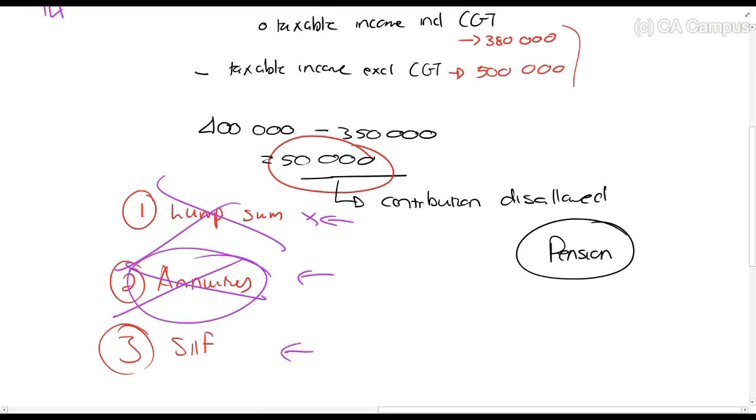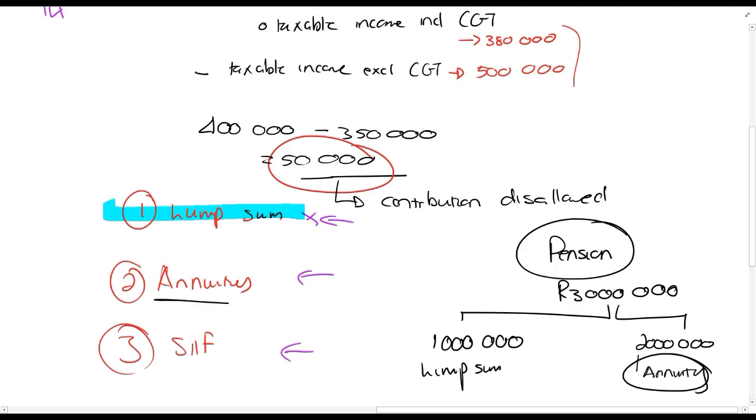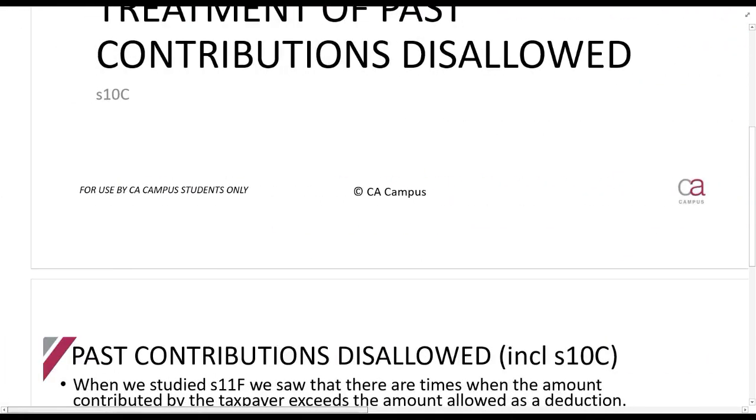This annuity we're talking about - please make sure you remember your pension fund. Let's say when you retire you have 3 million rands which belongs to you. You can take a million of that as a lump sum, and the two million will be taken as an annuity, so they'll say you receive 50,000 rands a month after you retire, or whatever the amount might be. You will deduct it against that annuity in terms of Section 10C.